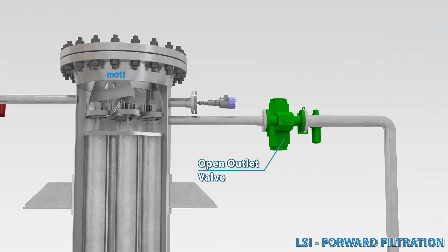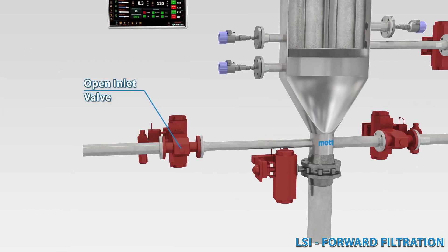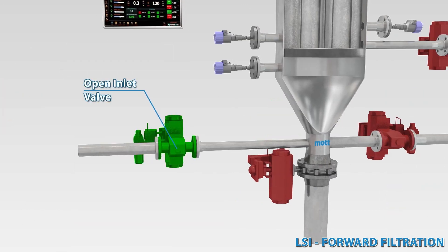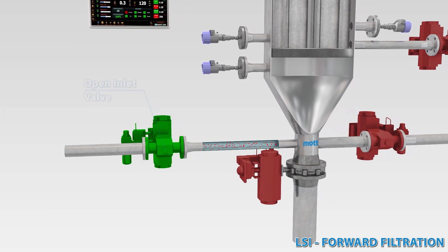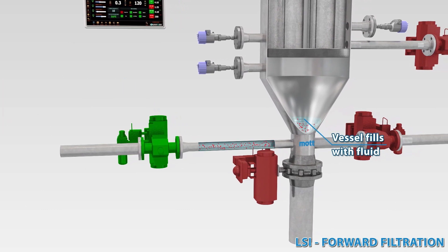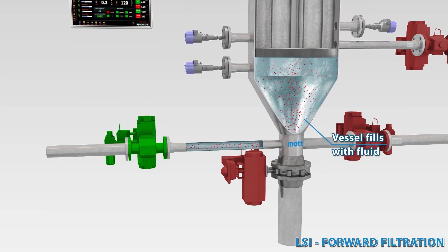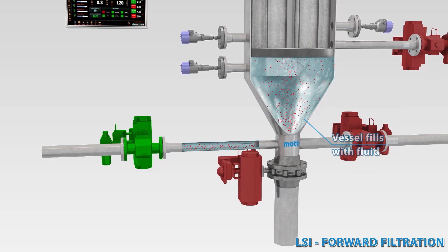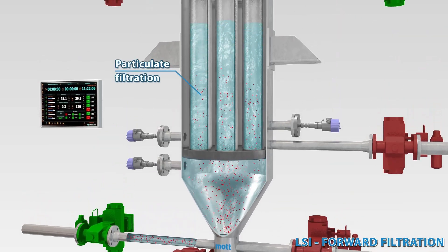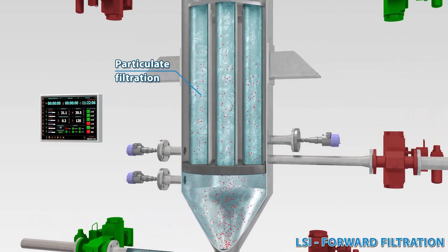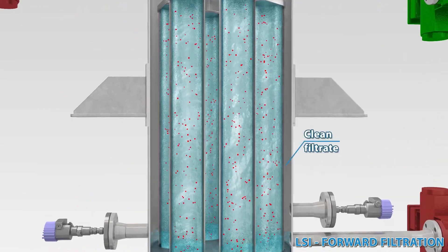Filtration begins by opening the process outlet and inlet to the filter. During online filtration, process fluid enters the heel of the filter vessel. This fluid travels up the length of the filter elements, then permeates through the porous metal media.